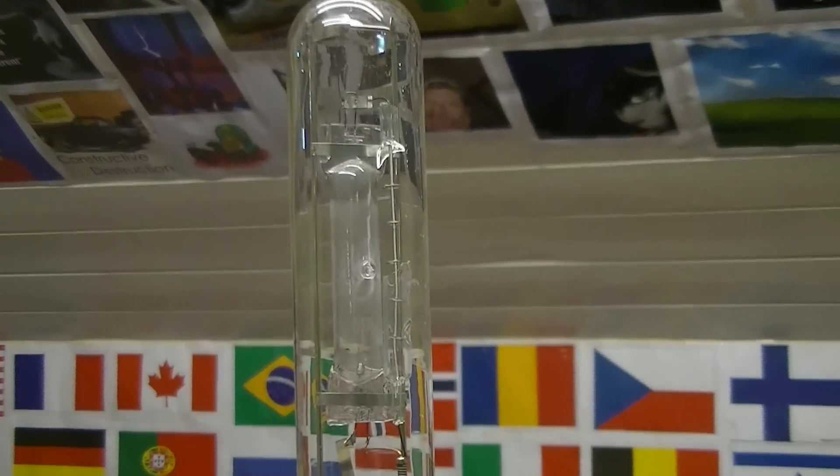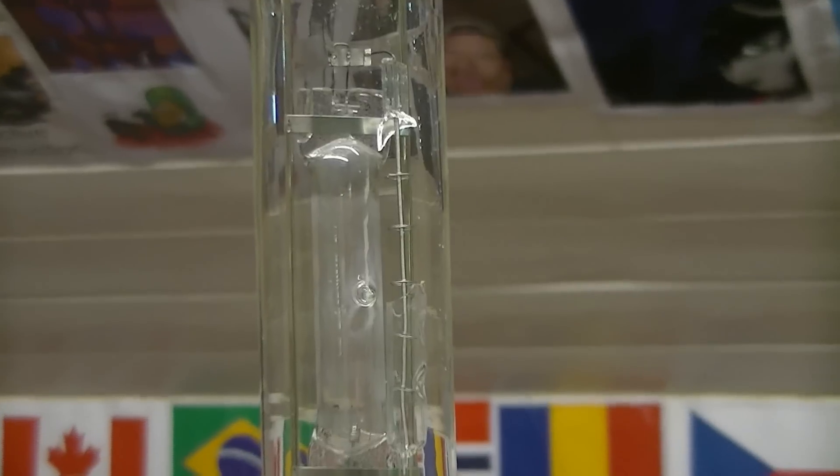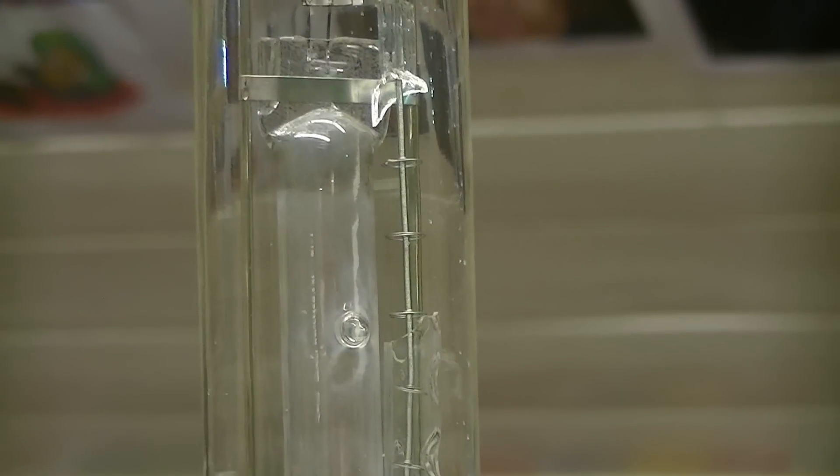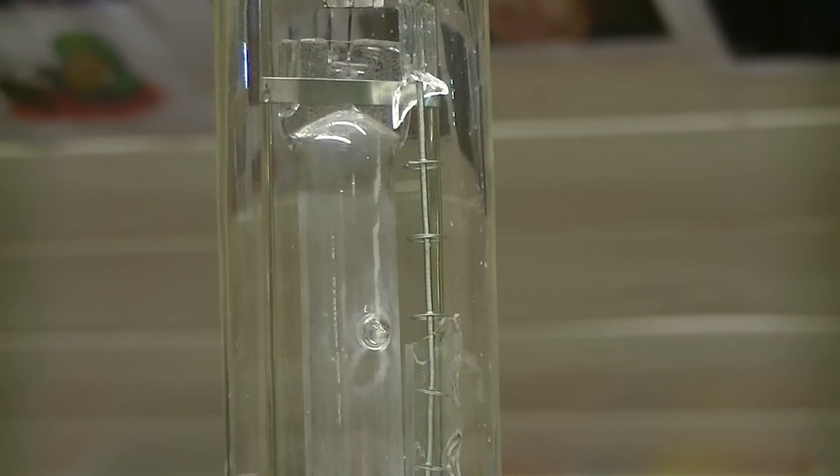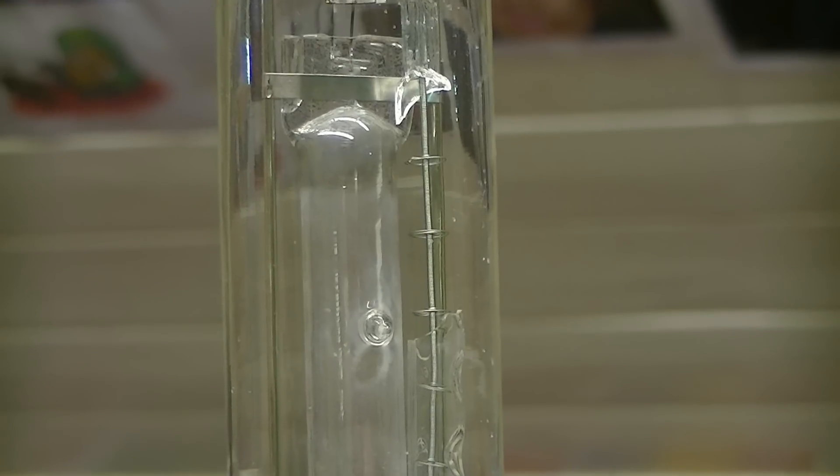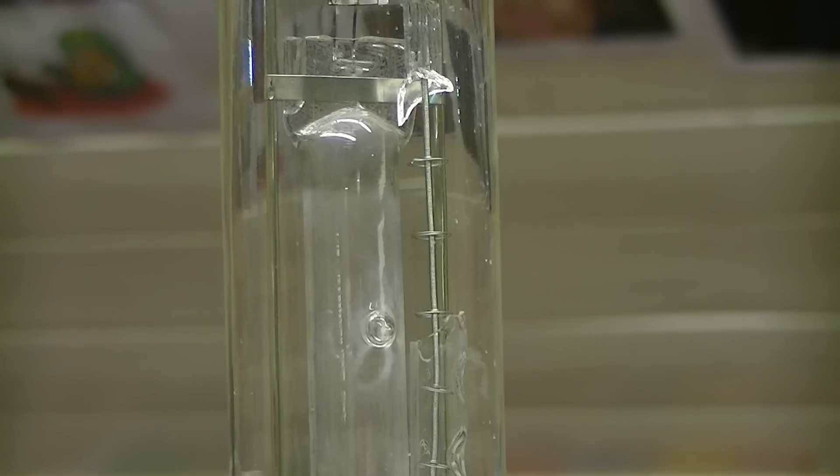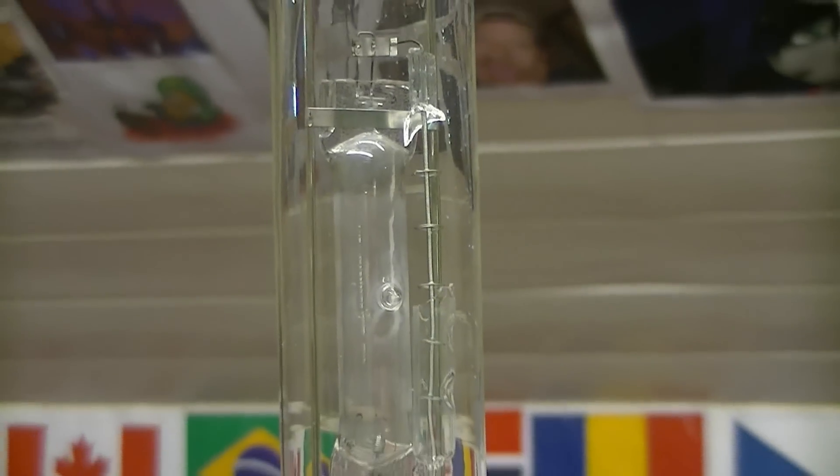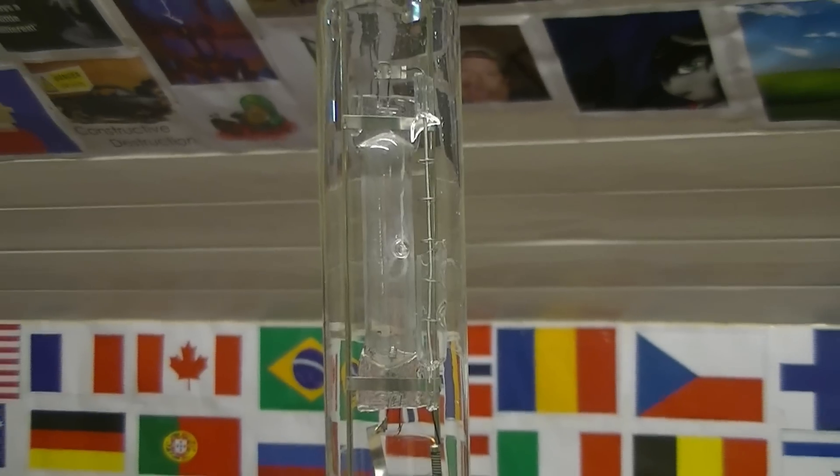In series with that arc tube you can see a halogen lamp, but as it happens that outer envelope on the halogen lamp is busted. But will it still work and what if we get an arc in that gap? We might have a dual arc lamp. Shall we see?